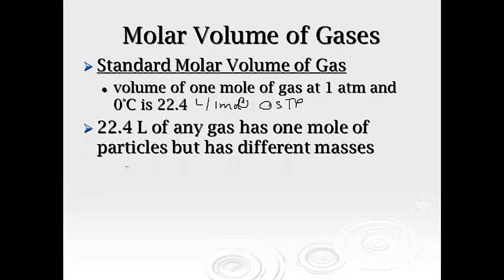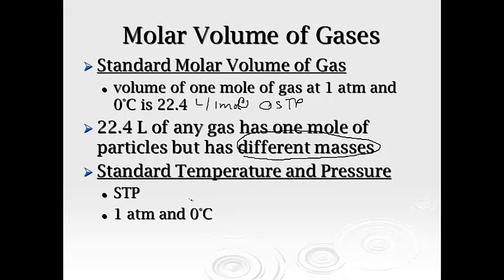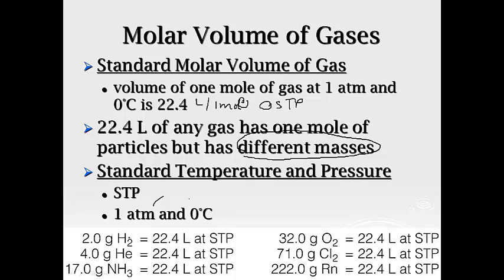All right, so 22.4 liters of any gas has one mole of particles, but will have different masses. That's where the molar mass part comes in, and so we're going to have to pull that back as well. Standard temperature and pressure, like I said, 1 atm and 0 degrees Celsius. And just to drive this point home, this is the molar mass of hydrogen, 22.4 liters. 1 mole of helium, 22.4 liters. 1 mole of ammonia, 22.4 liters. You get the point. If you have 1 mole of gas at STP, 22.4 liters.